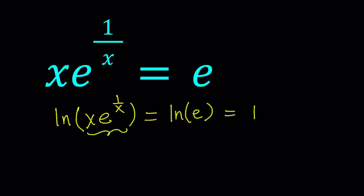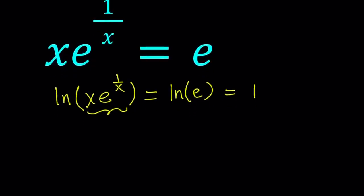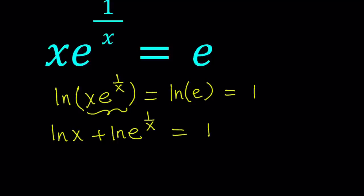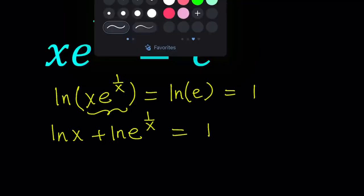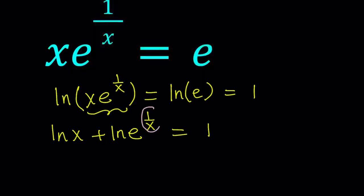Now here I'm going to use the product property of logs which says if you have the log of a product, then you can write it as a sum of two or more logs. So, this can be written as LN x plus LN e to the power 1 over x, and that is equal to 1. And then one more time using the power property here, we can just go ahead and move this to the front. And using the fact that LN e equals 1, we can just write this as LN x plus 1 over x equals 1.